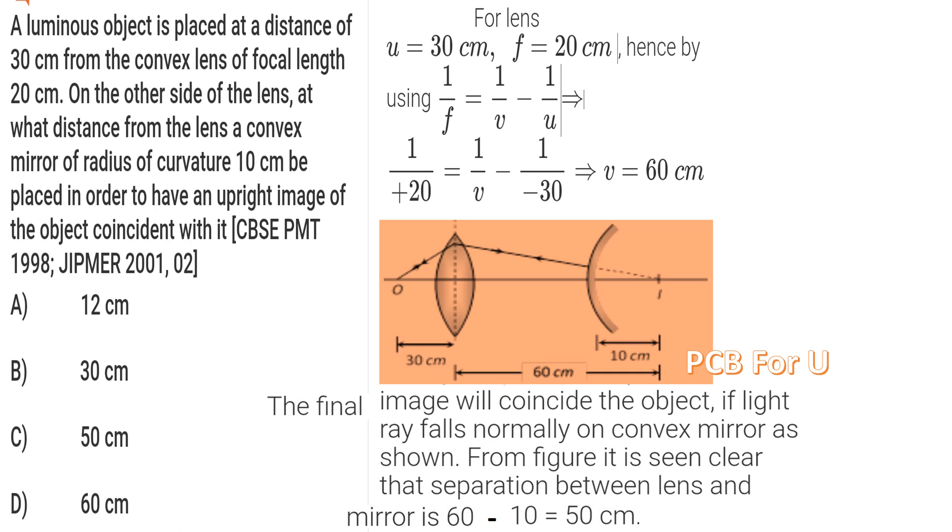A luminous object is placed at a distance of 30 centimeters from the convex lens of focal length 20 centimeters. On the other side of the lens, at what distance from the lens a convex mirror of radius of curvature 10 centimeters be placed in order to have an upright image of the object coincident with it.